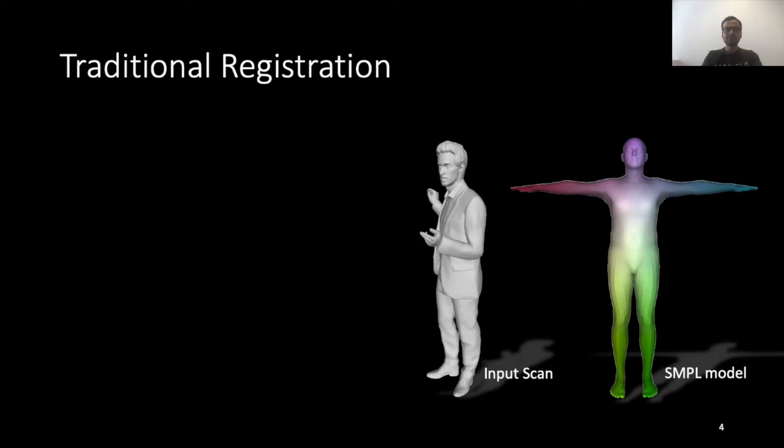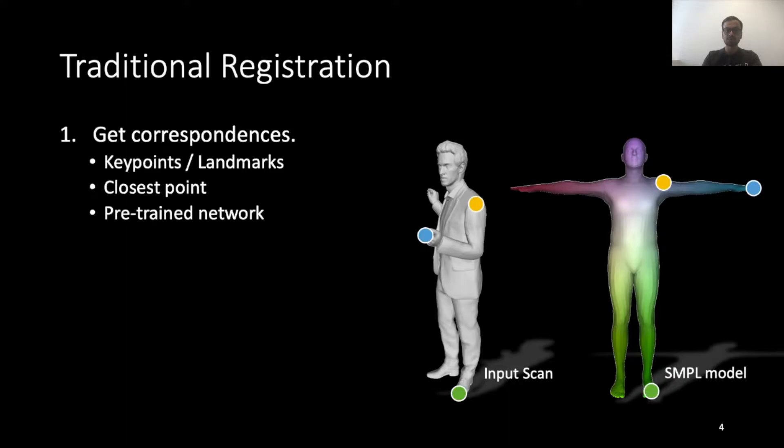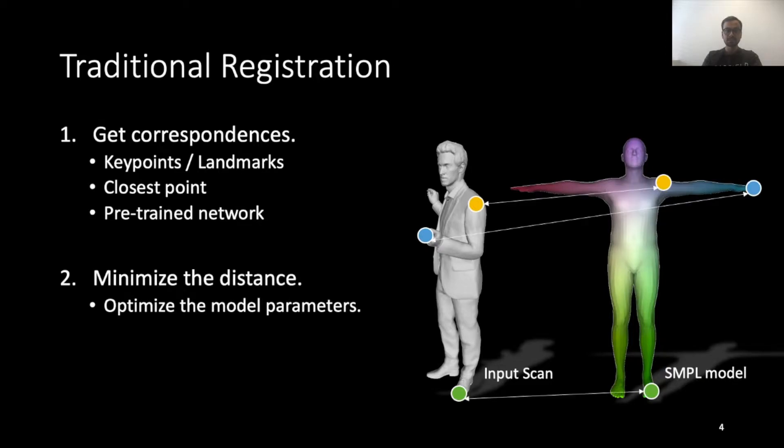Let's start by reviewing a typical registration pipeline. First step is to get correspondences from the input scan to the parametric model. Step 2 is to optimize the model parameters to minimize the distance between the scan points and the estimated corresponding point.